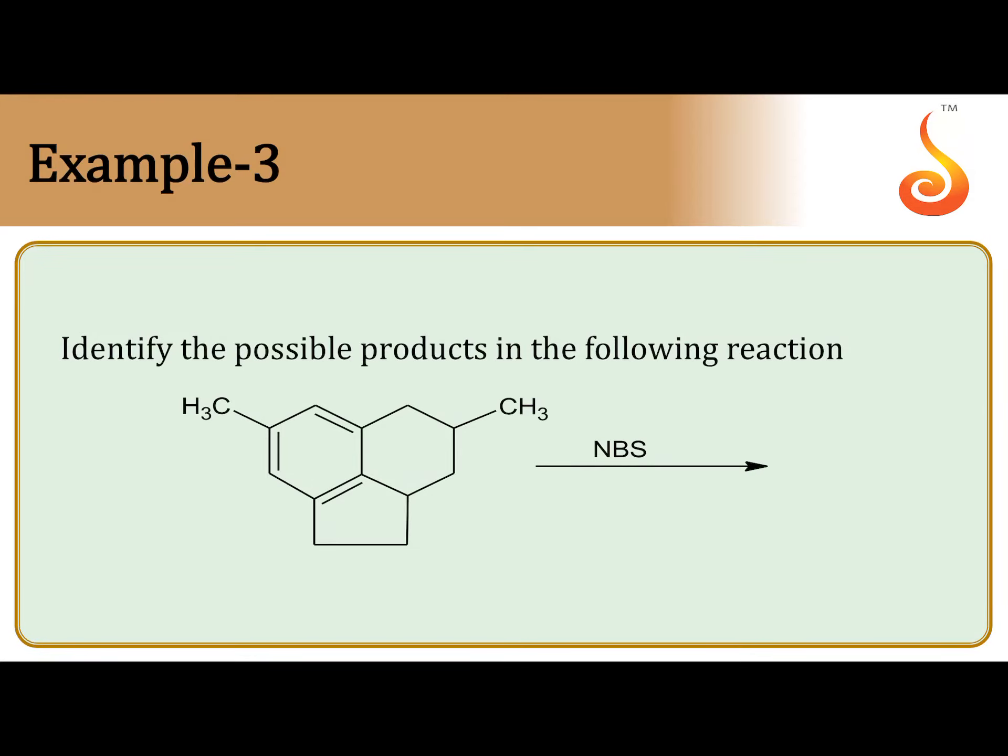Identify the possible products in the following reaction. So with NBS in the presence of light and CCL4, NBS provides bromine free radical.